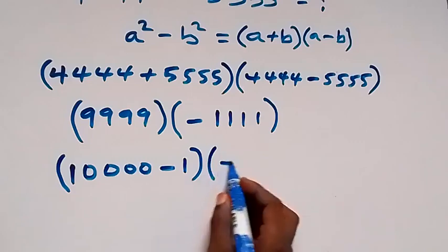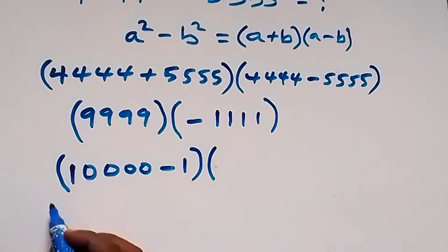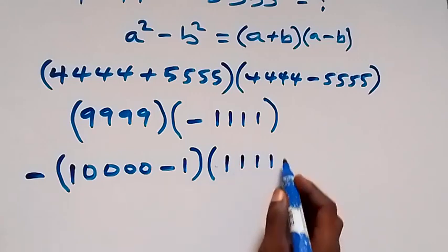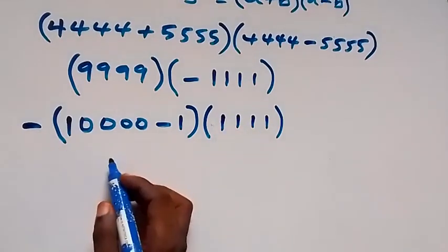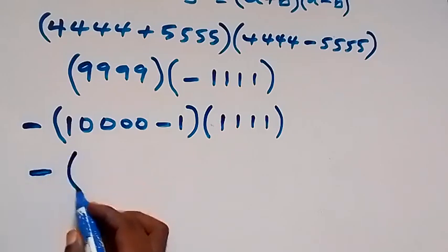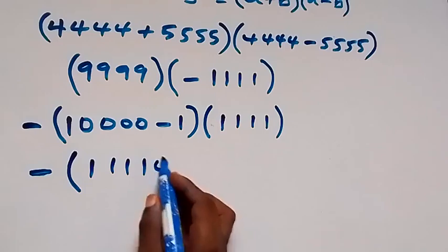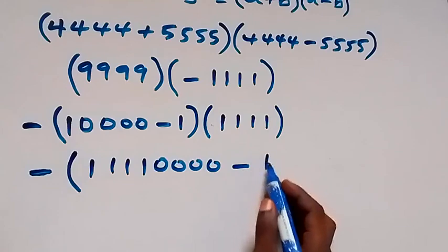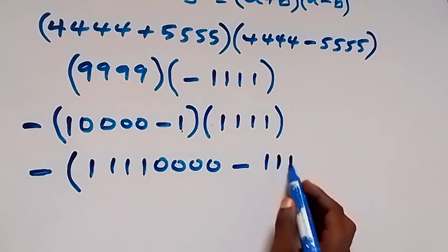Then times minus 1,111. We can take the minus sign to the front. Now we multiply 1,111 by (10,000 minus 1): that gives us 11,110,000 minus 1,111.